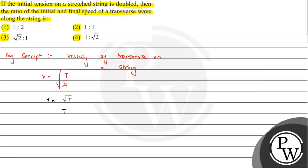Let's suppose that initially the tension is T, so the final tension will be 2T. The tension is doubled, then the ratio of initial and final speed will be asked - v1 upon v2.